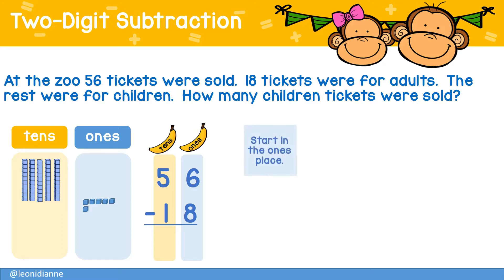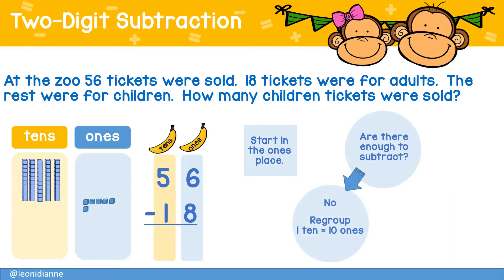Starting in the ones place, do we have enough to subtract? In this case, we don't. We'll need to regroup. We'll exchange one ten for ten ones. Next, we'll record this by decreasing the number of tens.